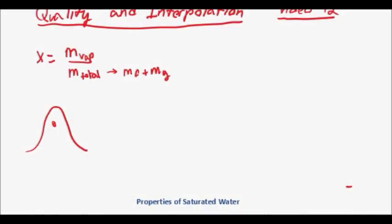If you want to know that, you can use the quality. So it turns out that quality is also equal to the ratio of the average internal energy you have, minus the internal energy of the fluid, divided by internal energy of the gas, minus the internal energy of the fluid.